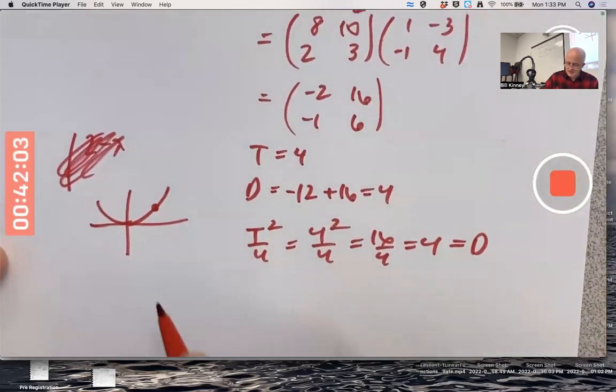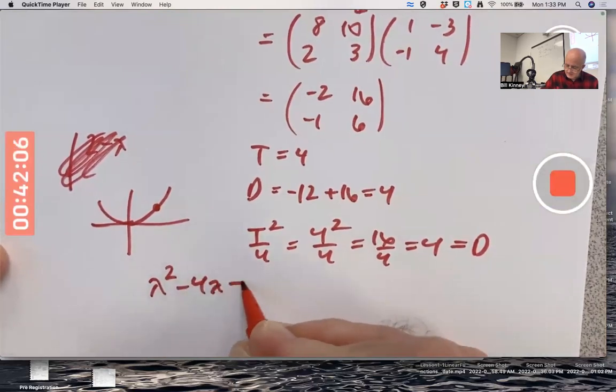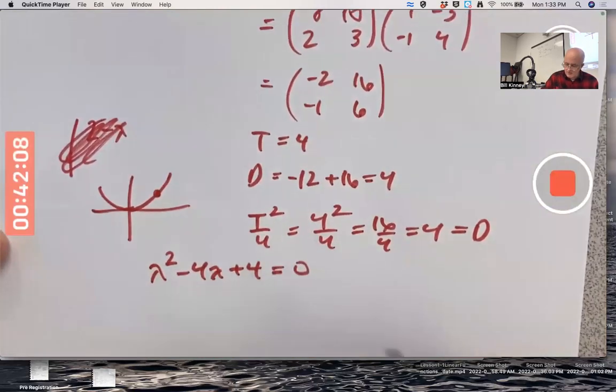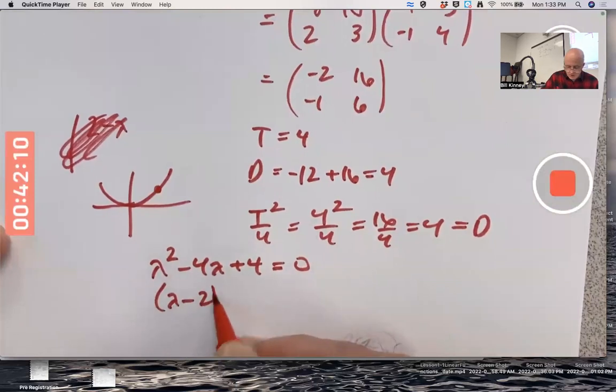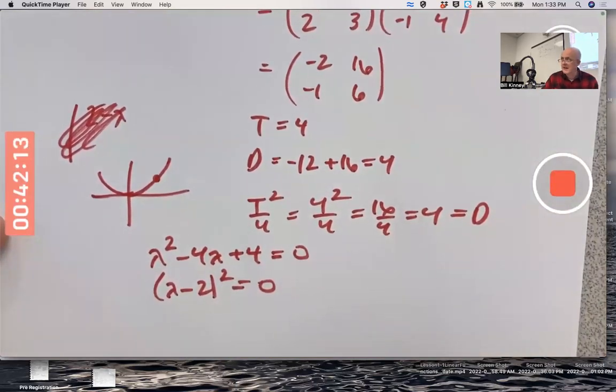What's the characteristic polynomial? It would be lambda squared minus four lambda plus four. Set that equal to zero. It factors as lambda minus two quantity squared. Yep. Two is a repeated eigenvalue.